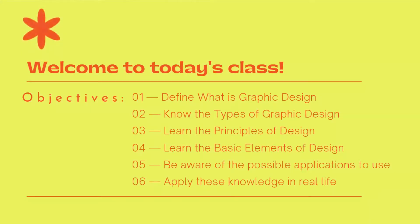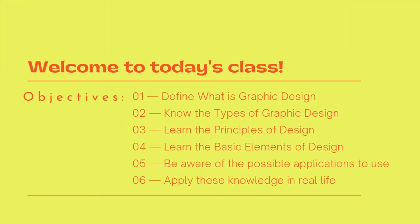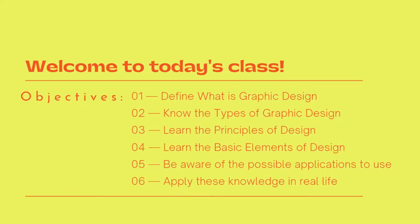So for the objectives today: number one, we will define what graphic design is. Number two is to know the types of graphic design. Number three is to learn the principles of design. Number four is to learn the basic elements of design. Number five, to be aware of the possible applications. And lastly, number six, to apply this knowledge in real life.